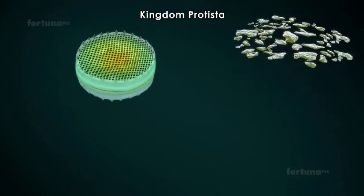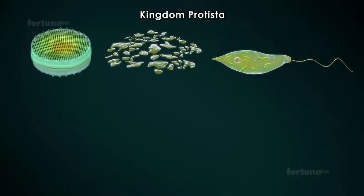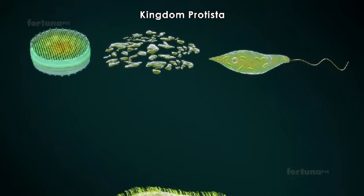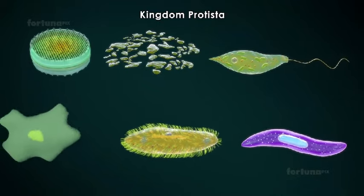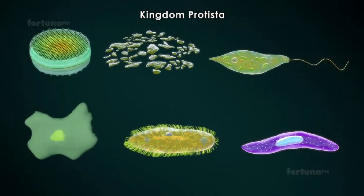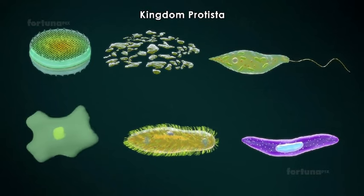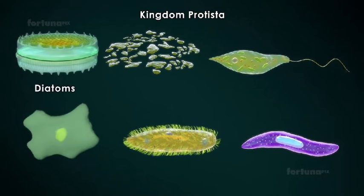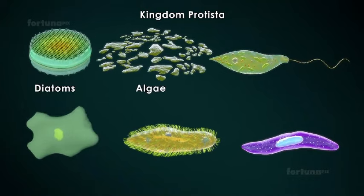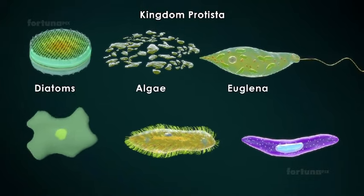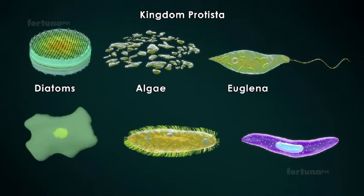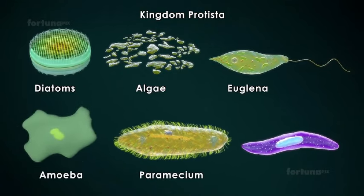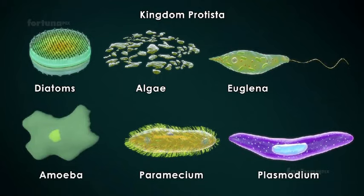Most members of this kingdom can, like plants, undergo photosynthesis and produce their own food, and like animals, will have locomotory structures. Most Protista are aquatic and include diatoms, algae, euglena, and protozoans such as amoeba, paramecium, and plasmodium.